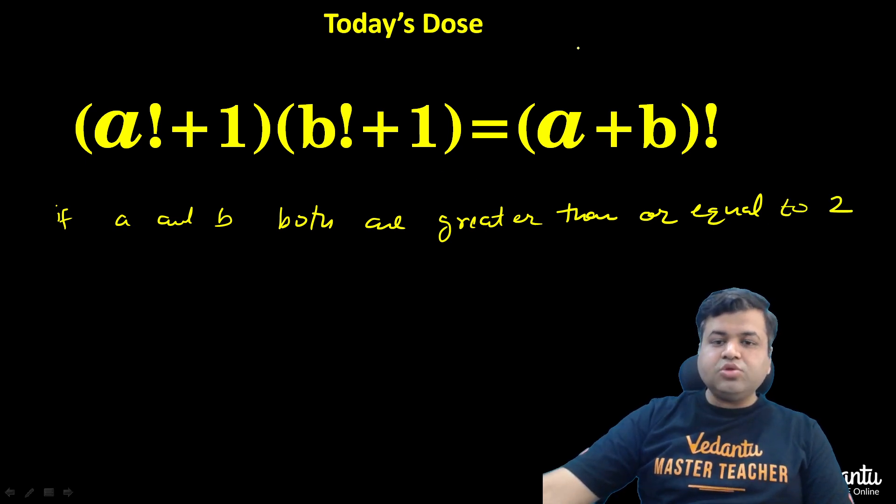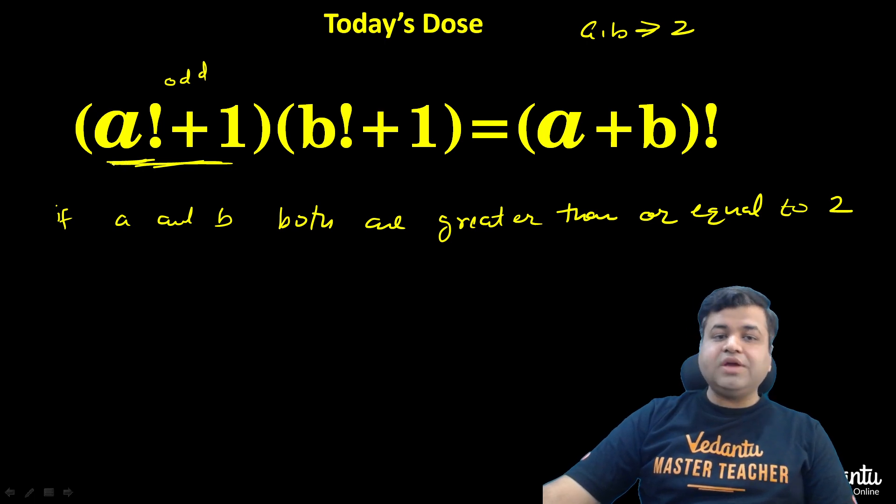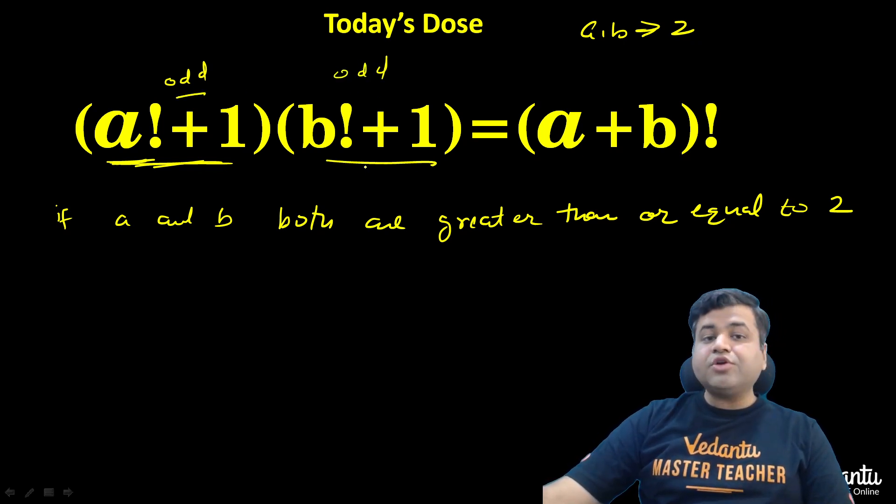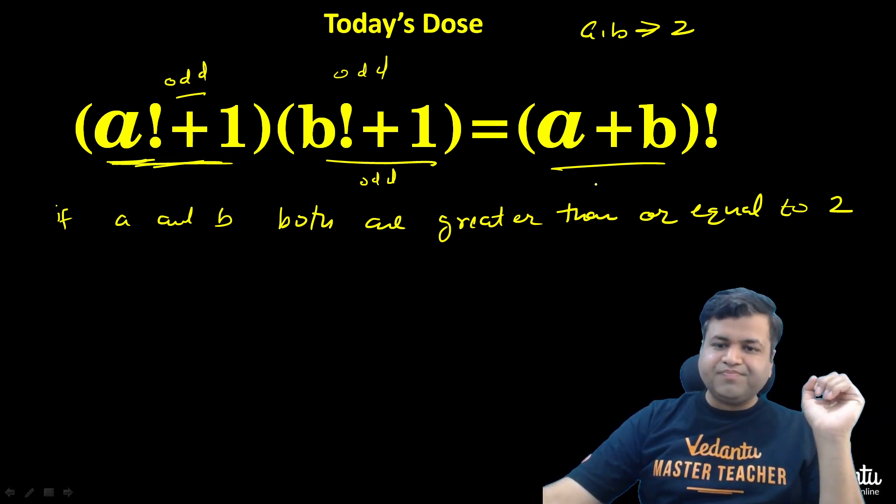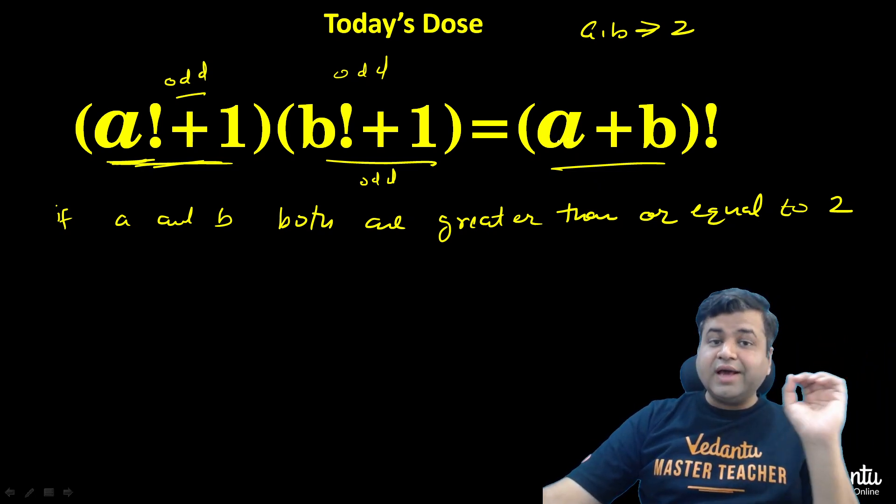If a and b are greater than or equal to 2, this will be an odd number clearly. Because 2 factorial, or if a is greater than 2, then that particular factorial is definitely an even number plus 1. This is definitely an odd number. This will also be odd, b factorial plus 1. Odd times odd. Left hand side will definitely be odd. But right hand side is clearly greater than or equal to 4 factorial, which must be an even number. So odd multiplied by odd cannot equal an even number.